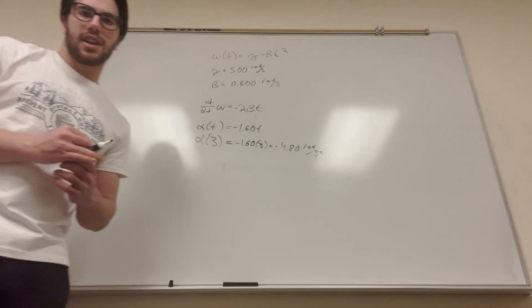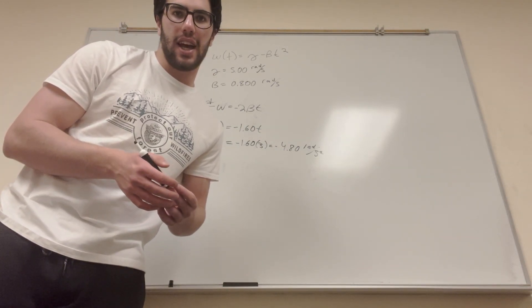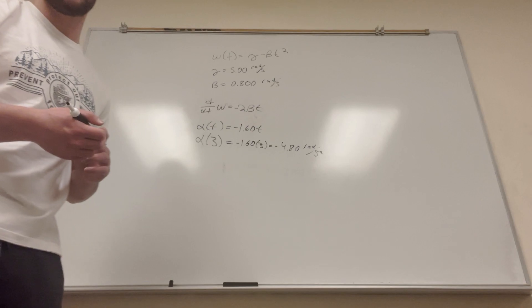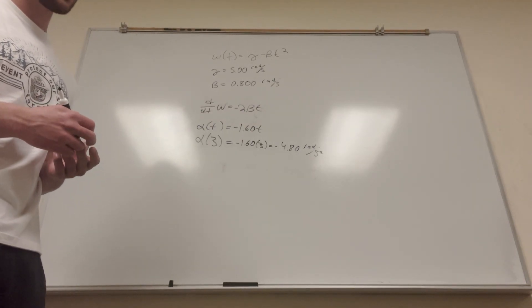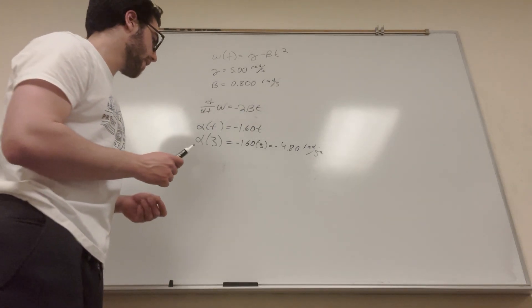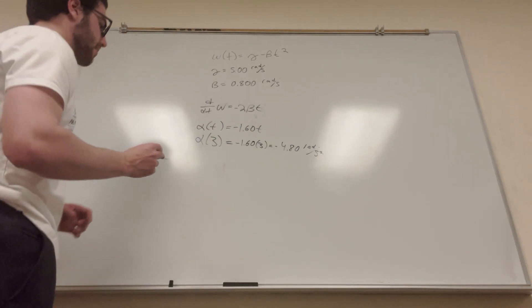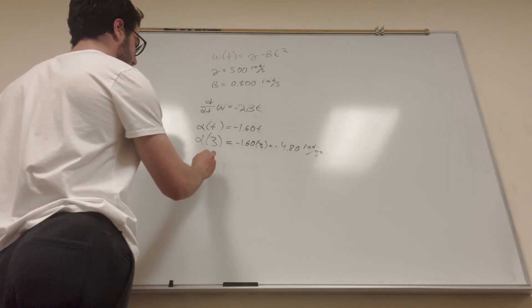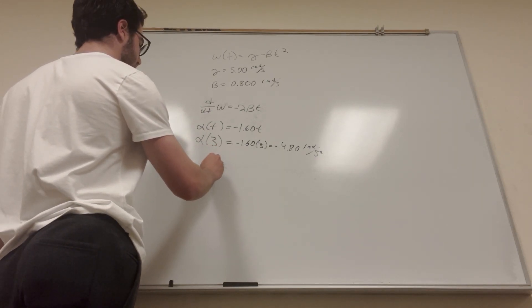Okay, now part C, it wants you to find the average angular velocity from 0 to 3 seconds, and asks you to compare them. Okay, so average angular velocity is equal to change in angular velocity over change in time.